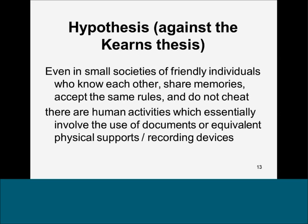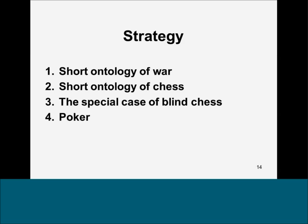The strategy is: I start by setting the scene with a very simplified ontology of war, then provide an ontology of chess, then talk about the special case of blind chess—which is actually the best case for John Kearns, because blind chess doesn't need any documents or anything like documents—and then finally I conclude with poker.